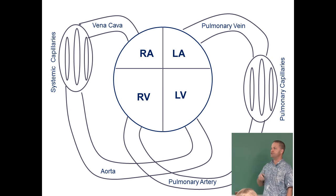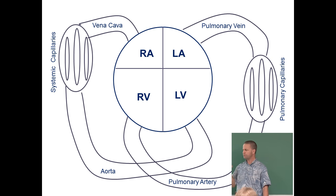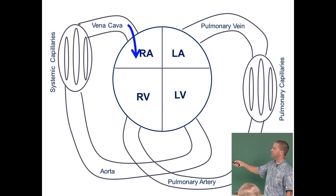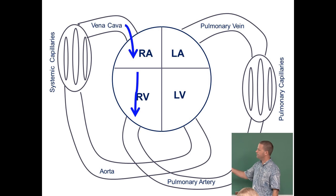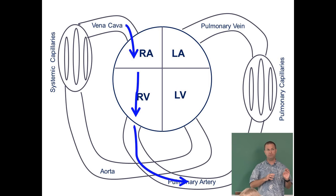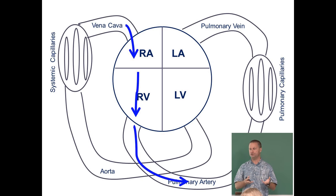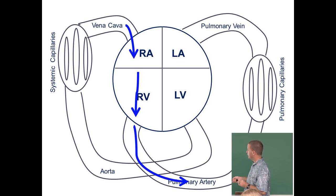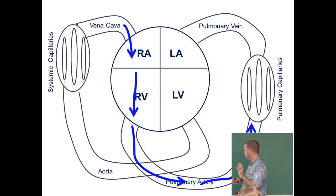Now let's discuss oxygenation. In the vena cava, oxygen is low — the blood has been through the tissues and delivered its oxygen. We stay low in oxygen through the right atrium, right ventricle, and into the pulmonary artery. This is a key test point: the pulmonary artery carries low-oxygen, deoxygenated blood — not oxygenated blood despite being an artery — because it's heading to the lungs to get oxygenated.